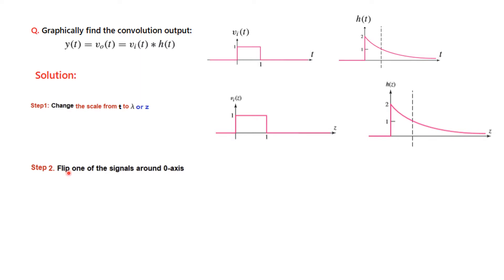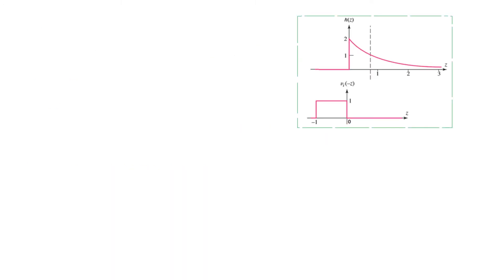Step number two is flip one of the signals around zero axis. Now between these two we can flip any of the signals, but it is better that we choose the one which looks simpler. So since this looks simpler we will flip this signal. And now you can see that the name has also changed. It is v(1 minus z). So from here we just turned it or flipped it toward the left hand side around the zero axis.